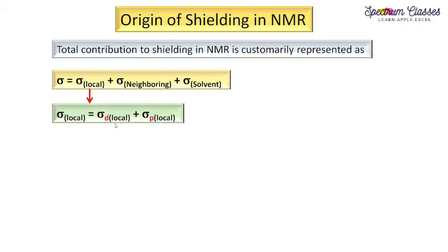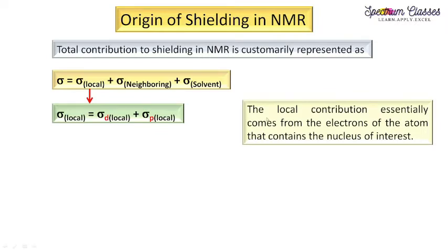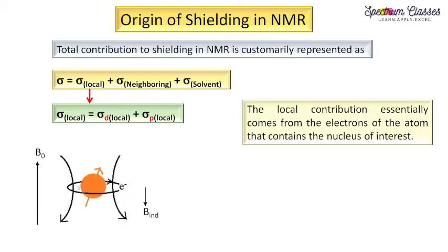Here, d stands for diamagnetic and p stands for paramagnetic. The local contribution essentially comes from the electrons of the atom that contains the nucleus of interest. As shown in the diagram, the nucleus of interest is surrounded by electrons revolving around it. The nucleus has its nuclear magnetic moment in the upward direction, while the electron has its magnetic moment in the opposite direction.